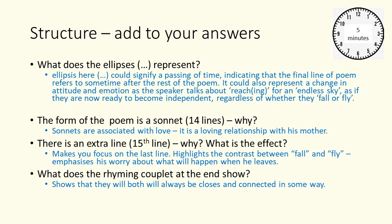The ellipsis here could signify a passing of time, indicating that the final line of the poem refers to some time after the rest of the poem. It could also represent a change in attitude and emotion as the speaker talks about reaching for an endless sky, as if they are now ready to become independent regardless of whether they fall or fly. Sonnets are associated with love and it is a loving relationship with his mother. The extra fifteenth line makes you focus on the last line, highlights the contrast between fall and fly, emphasises his worry about what will happen when he leaves, and the rhyming couplet at the end shows that they will both always be close and connected in some way.